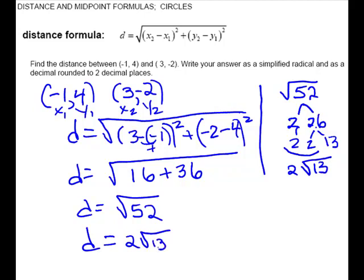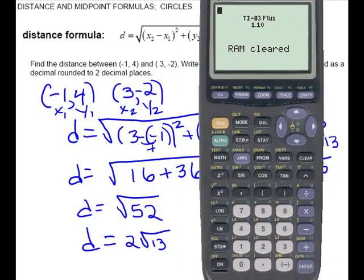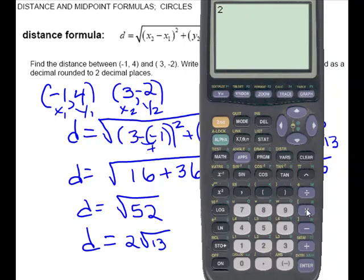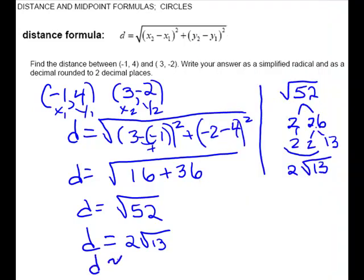Then they ask us to give a decimal rounded to two places. So I'm going to pull the calculator up and we'll plug in 2 times the square root of 13, and I'm getting 7.2111. They said to round to two places, so you look at the third one. If it's five or higher, this would go up. It's lower, so these are going to go off, so you're going to have 7.21.